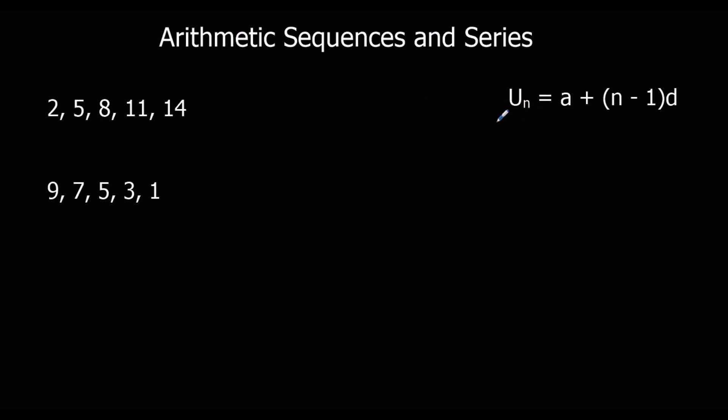We can use this formula here to find a term in the sequence. We need to know what each of these things in the formula means. a is the first term of the sequence. n is the term we're looking for, a term in the sequence. And d is the common difference, whatever it's going up or down in.